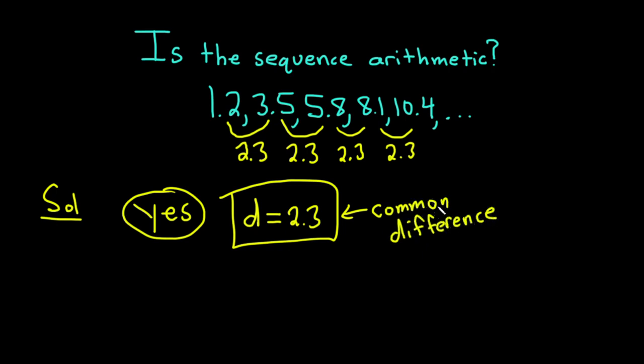You might be wondering, why is it called the common difference if we're adding? Well, you can get it by subtracting. You can take any of these numbers, for example, the 5.8, and you can subtract the previous numbers. So 5.8 minus 3.5. When we subtract these, we just get 2.3.